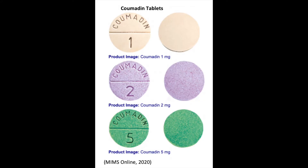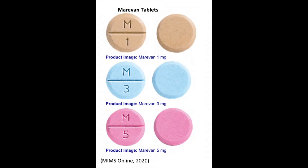Warfarin is available in two brands: Coumadin and Marevan. These two brands are interchangeable due to bioavailability, but they have differences in available doses.